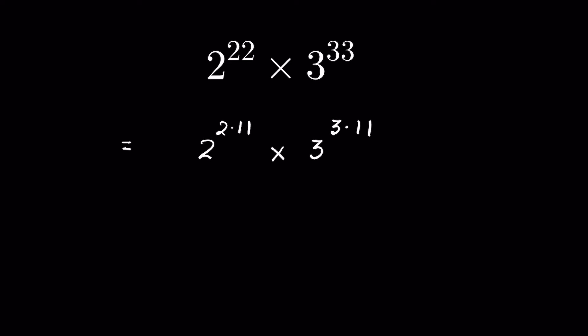Now there is an identity. If a raised to the power m times n, this we can write it as a raised to the power m whole raised to the power n.